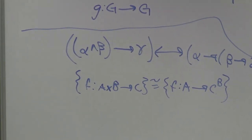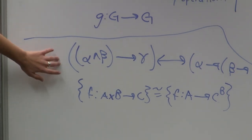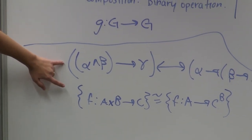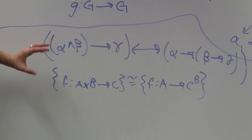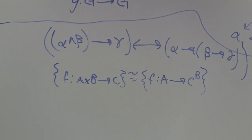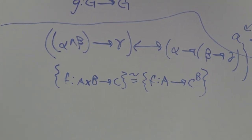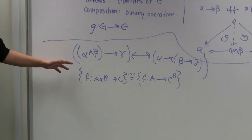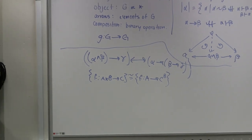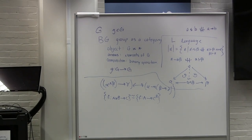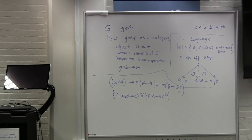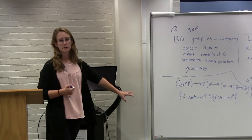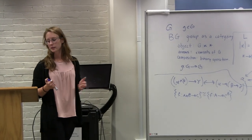This is something we wouldn't be aware of without category theory — without having this level of abstractness to talk about these structural relations. It's also interesting because there was already a noticed similarity between conjunction and Cartesian product, and that these two statements were somehow related. Category theory allows us to give a more concrete explanation of how and why they're related.